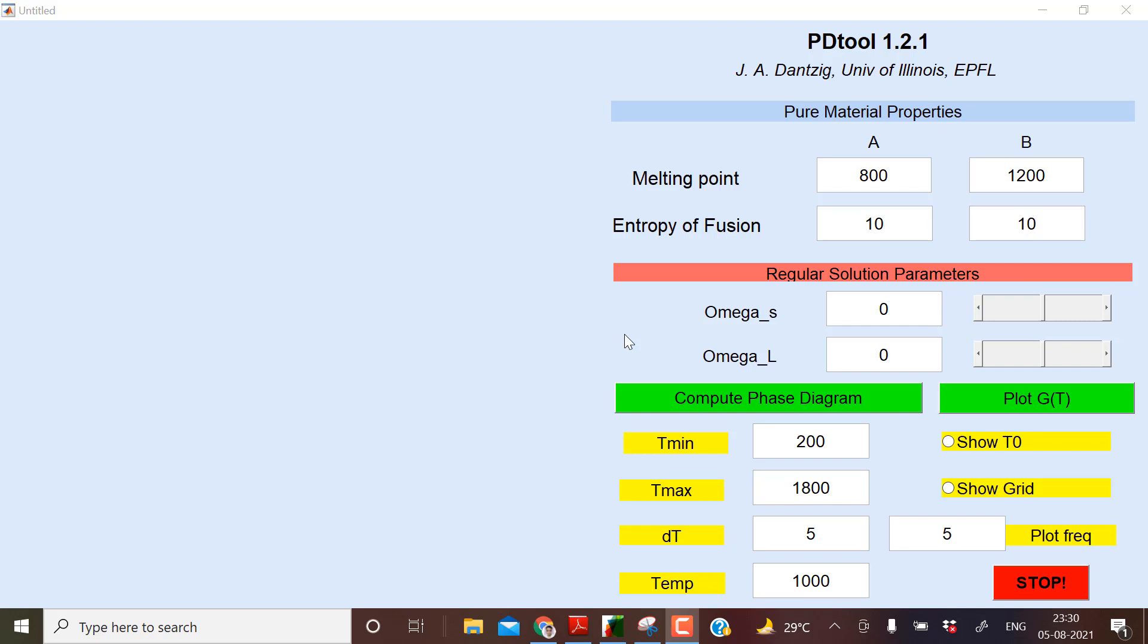Now see here, initially when you open this PDtool, we have two components like A and B. Initially the temperature is taken by default as 800 for A and 1200 Kelvin for B. Entropy of fusion is 10 and 10. For omega_s, it is the interaction parameter in solid phase, and omega_l is the interaction parameter in liquid phase.